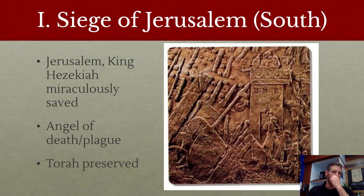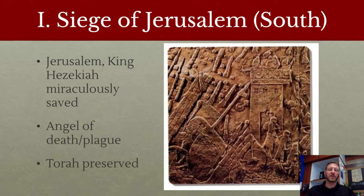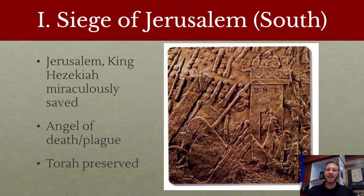Assyria does try to conquer the last two tribes, Judah and Benjamin in the south. They lay siege to Jerusalem — it's incredibly outnumbered. King Sennacherib mocks the God of Israel, saying the gods of all the other nations he's conquered haven't saved them, so Israel's God won't either. But God, through the prophet Isaiah, says he will fight for Judah. The angel of death killed hundreds of thousands of their troops in one night. Historically, for reasons unstated, the king of Assyria simply decided to turn around and leave — Jerusalem is never conquered by the Assyrians.